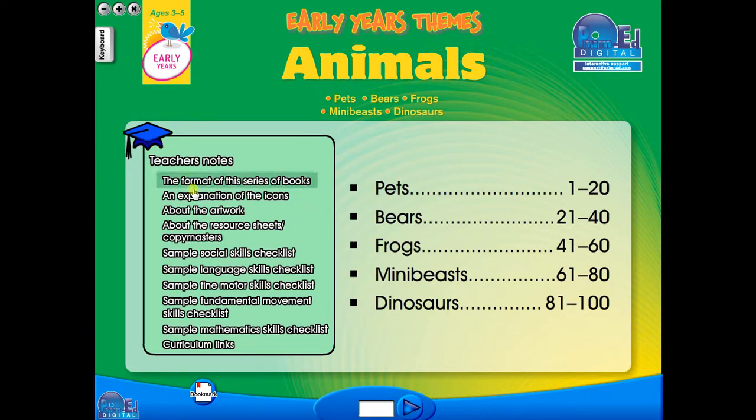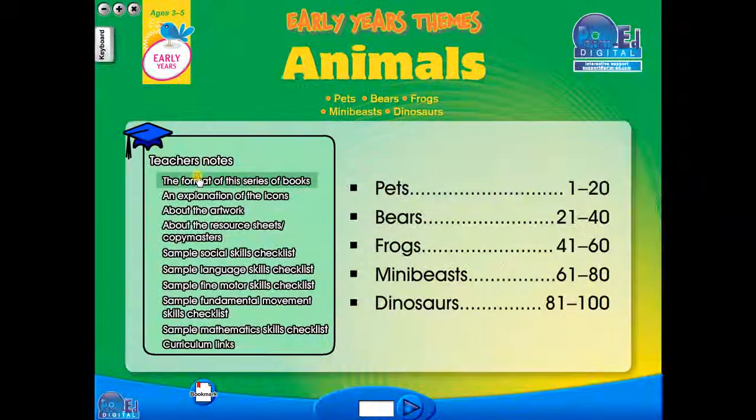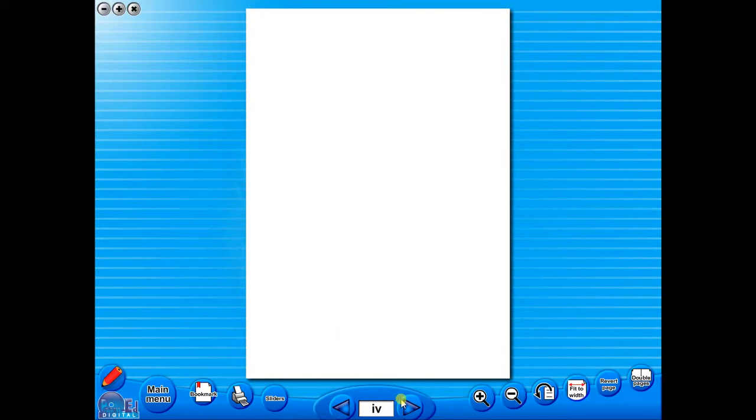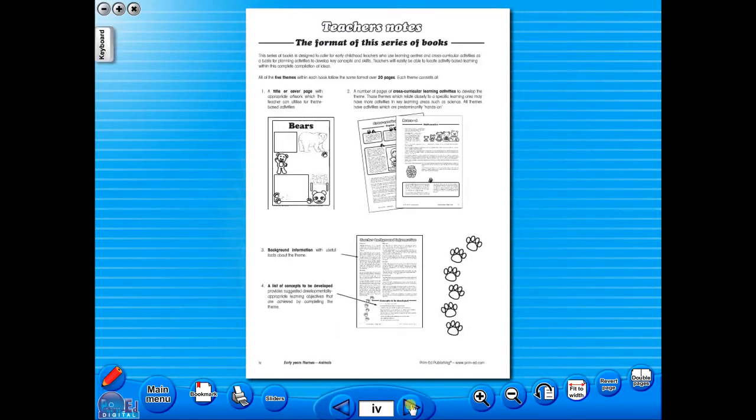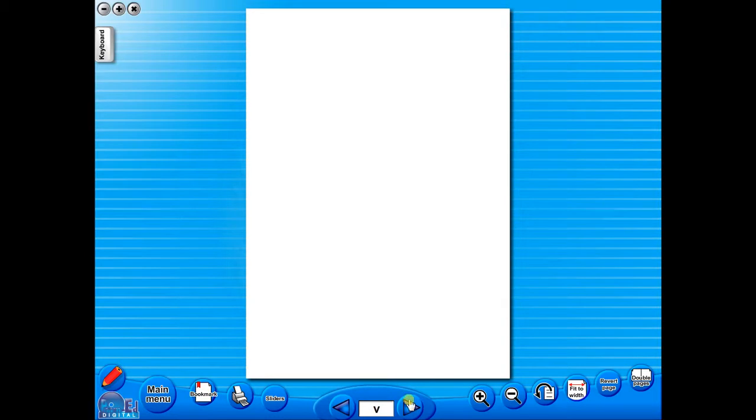When you click on any topic, you can scroll through the pages by clicking on the left and right arrows, making it easy to leaf through the resource. But you can also select a specific page from the main menu.